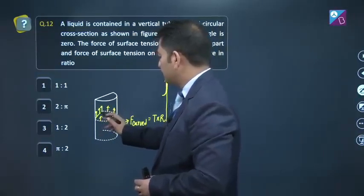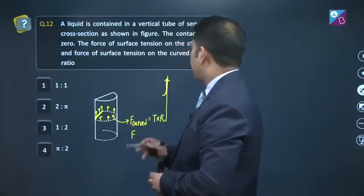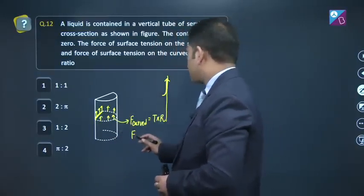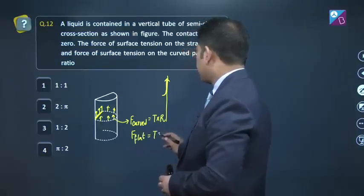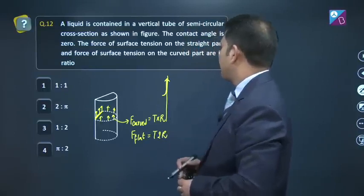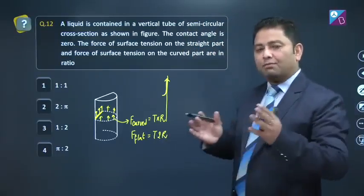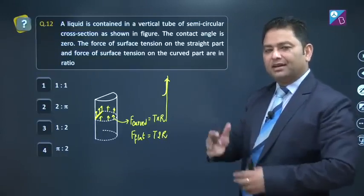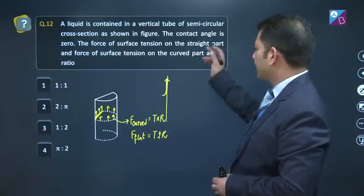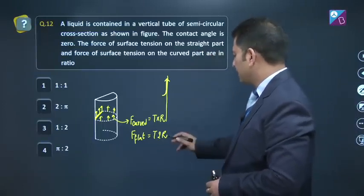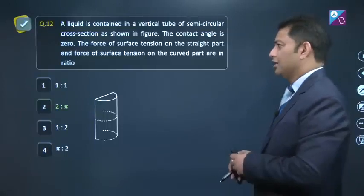F on the straight part or flat part is T multiplied by 2r. Surface tension multiplied by length. We don't need to take components because the angle of contact was 0 degree. The ratio of straight to curved part is 2r upon pi r, that will be 2 is to pi, option number 2.